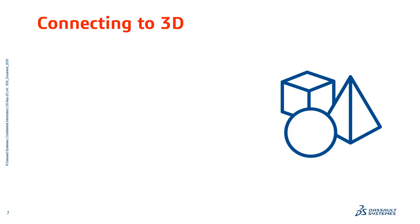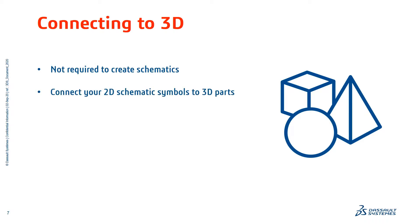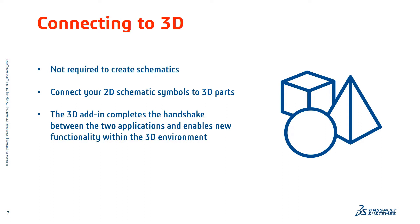SOLIDWORKS Electrical is its own standalone tool and does not automatically connect to 3D. There is a 3D add-in that you would need to purchase on top of the SOLIDWORKS Electrical Schematic Tool. The 3D connection is not required to create schematics — all schematics are done in the SOLIDWORKS Electrical executable. However, you can connect your 2D schematics and schematic symbols to your 3D parts and vice versa. This 3D add-in completes the handshake between the two applications and enables new functionality in the 3D environment, such as routing your wires and cables. Ultimately, the end goal is to allow teams to collaborate more efficiently.